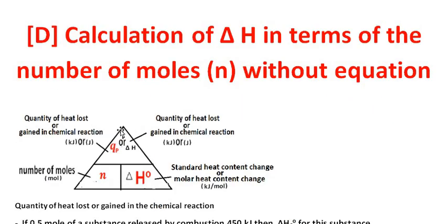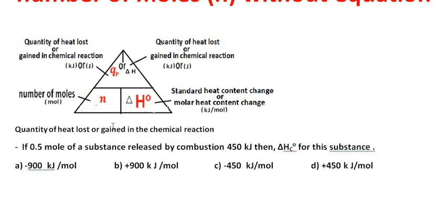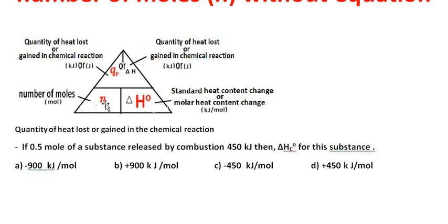Here is another method for calculation of delta H in terms of the number of moles, without an equation. Delta H is the quantity of heat lost or gained in a chemical reaction in kilojoule. This may also be denoted by QP, the quantity of heat at constant pressure, which is the condition of the experiment. N is the number of moles, and delta H naught is the standard molar heat content change, with unit kilojoule per mole. To calculate delta H naught, divide delta H in kilojoule over N, the number of moles.